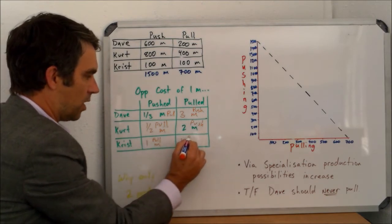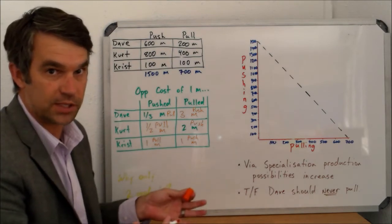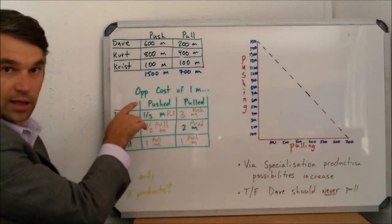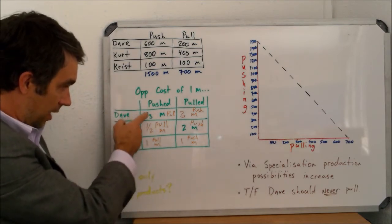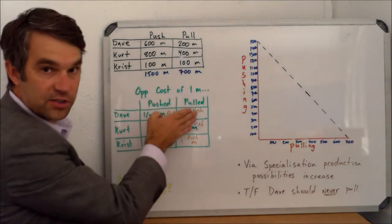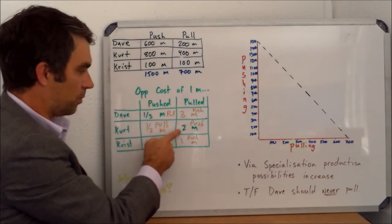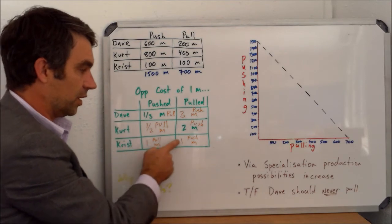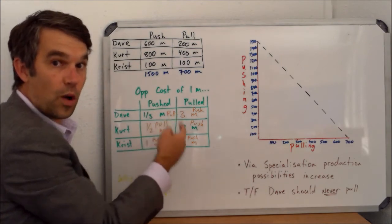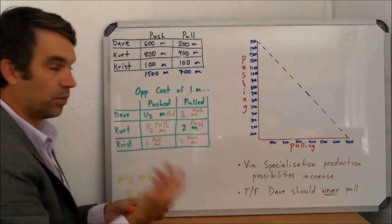Think about it like shopping: if an item is the same whether you buy it in store A, B, or C, you'd buy the cheapest one. Here the product is the same, but the opportunity cost changes depending on which person is doing it. We have everyone pushing, so we need to figure out the cost of pulling. If Dave pulls, we lose three pushed meters. If Kurt pulls, we only lose two pushed meters. If Chris pulls, we only lose one pushed meter. So this is the cheapest price — one is less than two and three. We're going to first have Chris begin to pull instead of push.